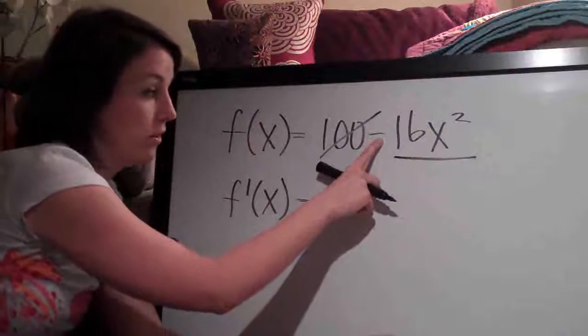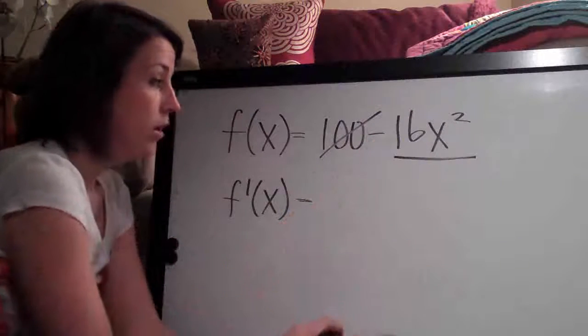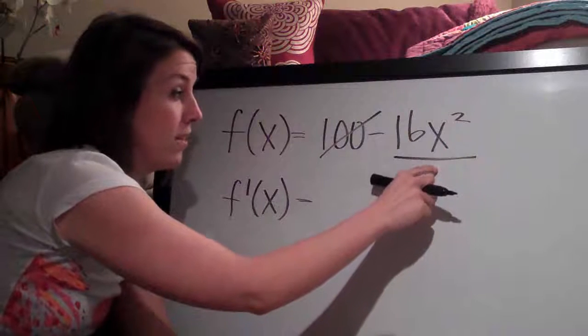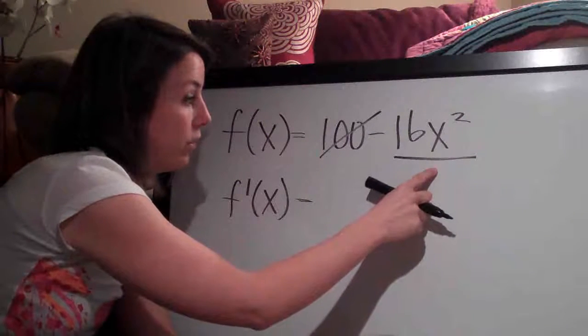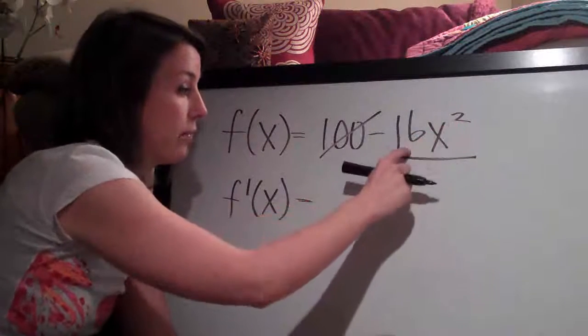We'll also have to keep in mind that there's a negative in front of it. So the way that we're going to take the derivative of this, as before, is the exponent times the coefficient.